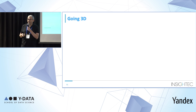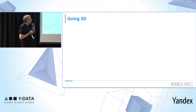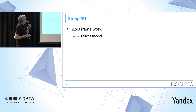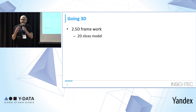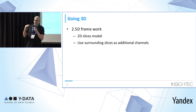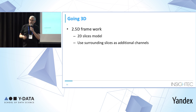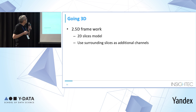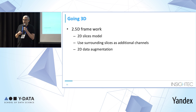We need to give a solution for the 3D case — we don't know the location in all directions. I use a 2.5D framework, in which I train on 2D slices, but since I also need the third dimension, I use the surrounding slices as additional channels. This means for every slice, I have the slice itself plus the slices above and below as additional channels of this 2D slice.